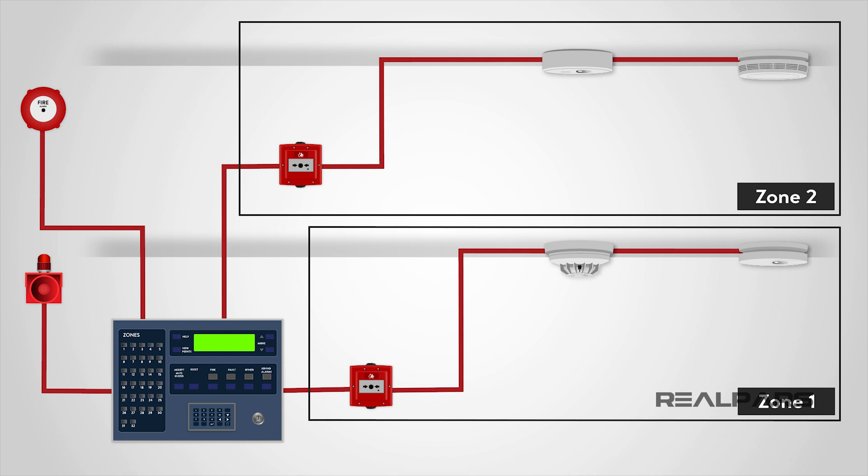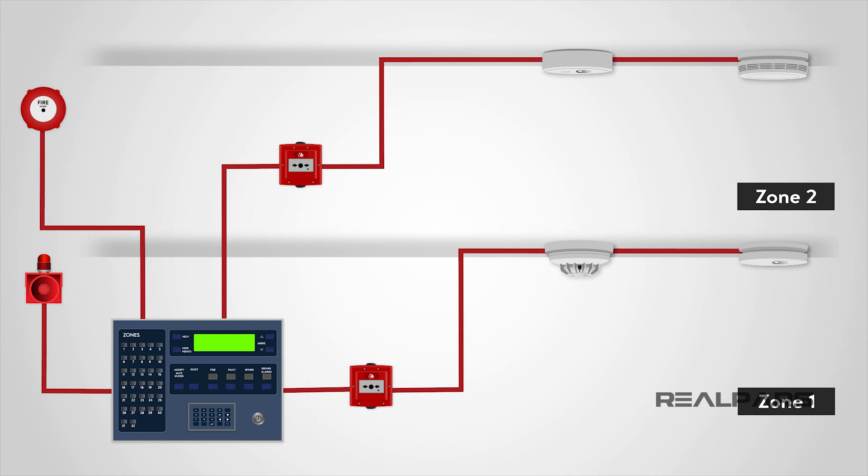This is important for both the fire brigade and general building management. Each zone is indicated at the fire alarm control panel, either with an indicator lamp, a text display, or in some cases both.